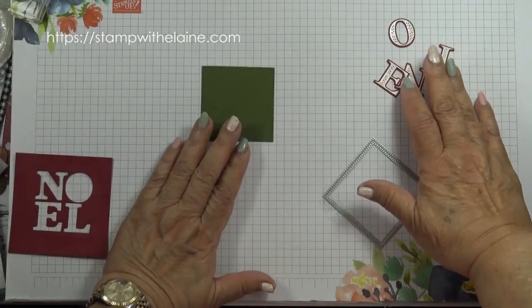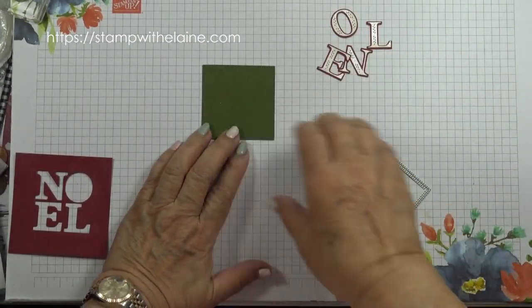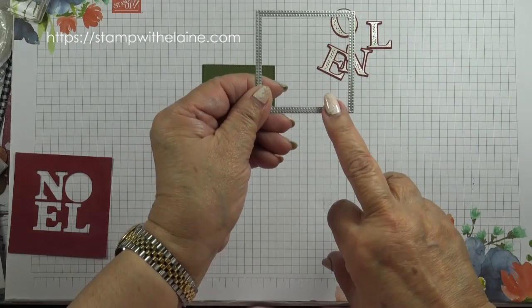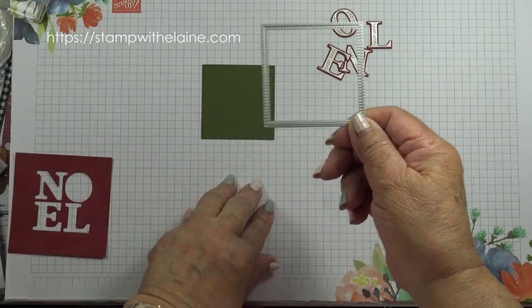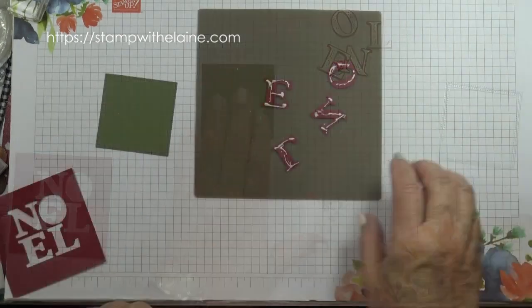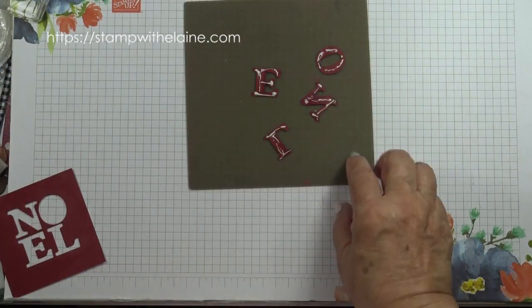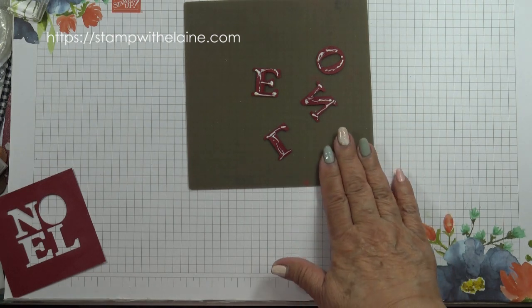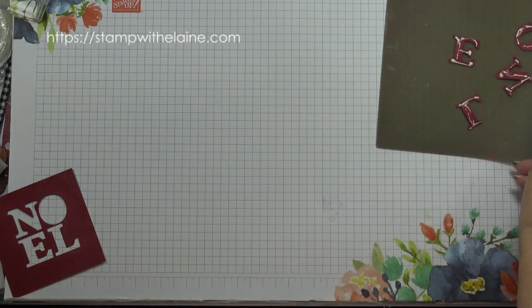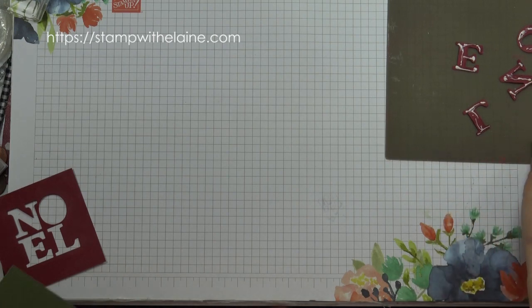Now I can glue these letters to the second to largest Stylish Shapes die mat layer. I've applied the multi-purpose glue onto the back of the letters. Now I'm going to let that dry so that the letters will be repositionable.